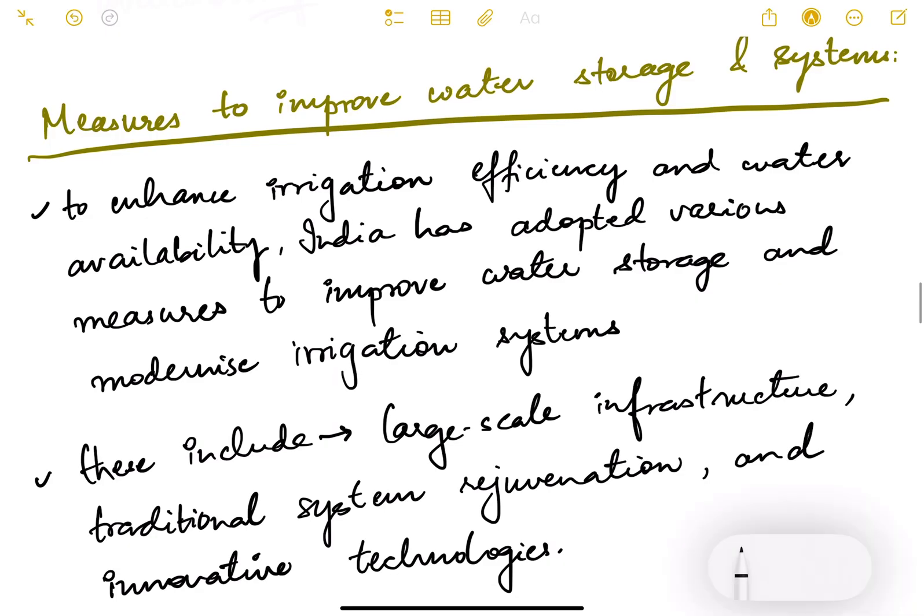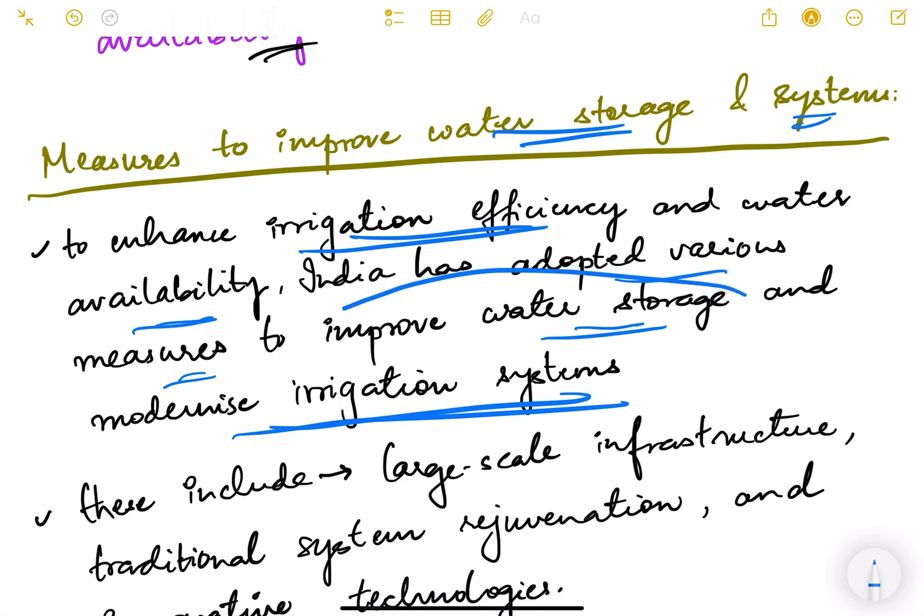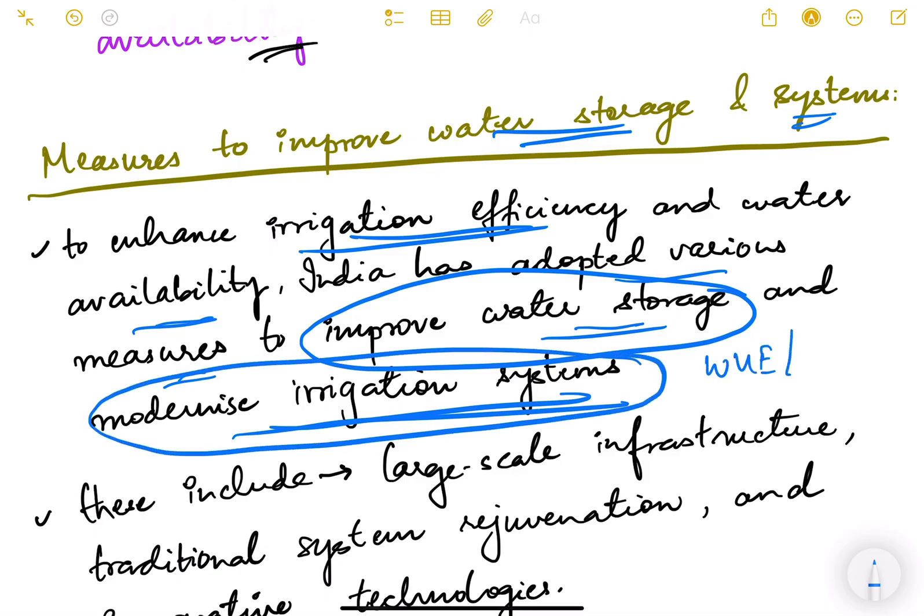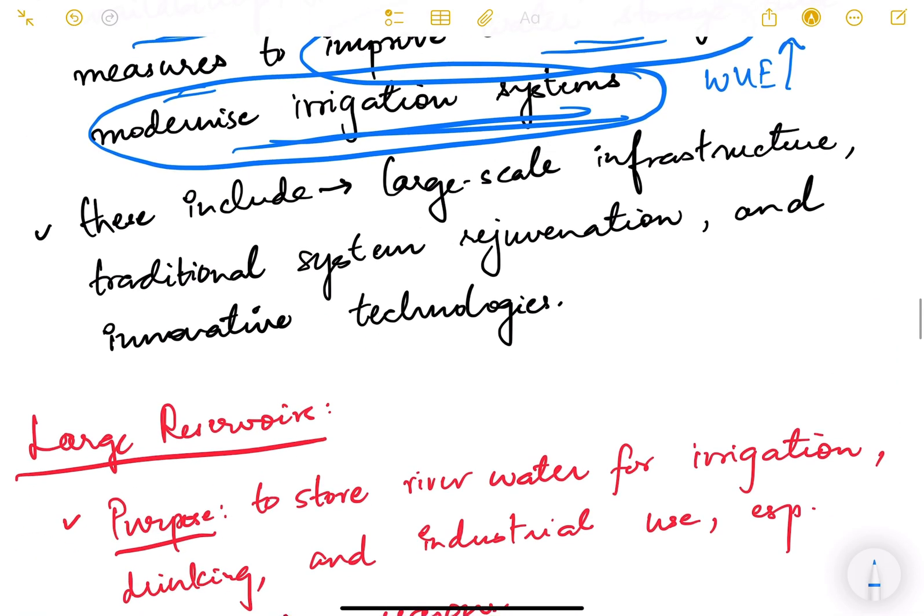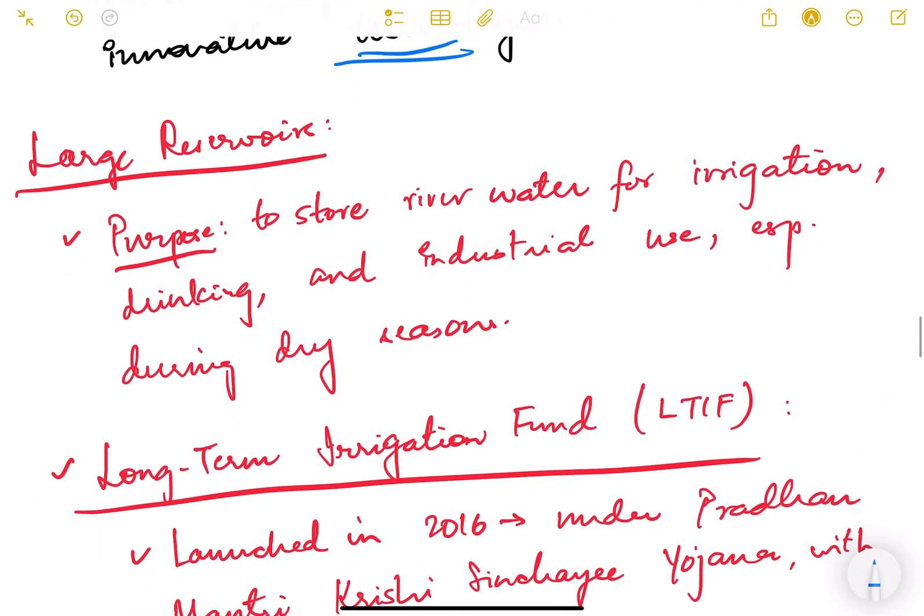Now what are the various measures to improve water storage and systems? To enhance irrigation efficiency and water availability, India has adopted various measures to improve water storage and modernize irrigation systems. We have to work on basically two main things: one is to improve storage, and second is to modernize irrigation systems so that water use efficiency is increased and water storage is done better—more recharge, less extraction. These include large-scale infrastructure, traditional systems rejuvenation, and innovative technologies.